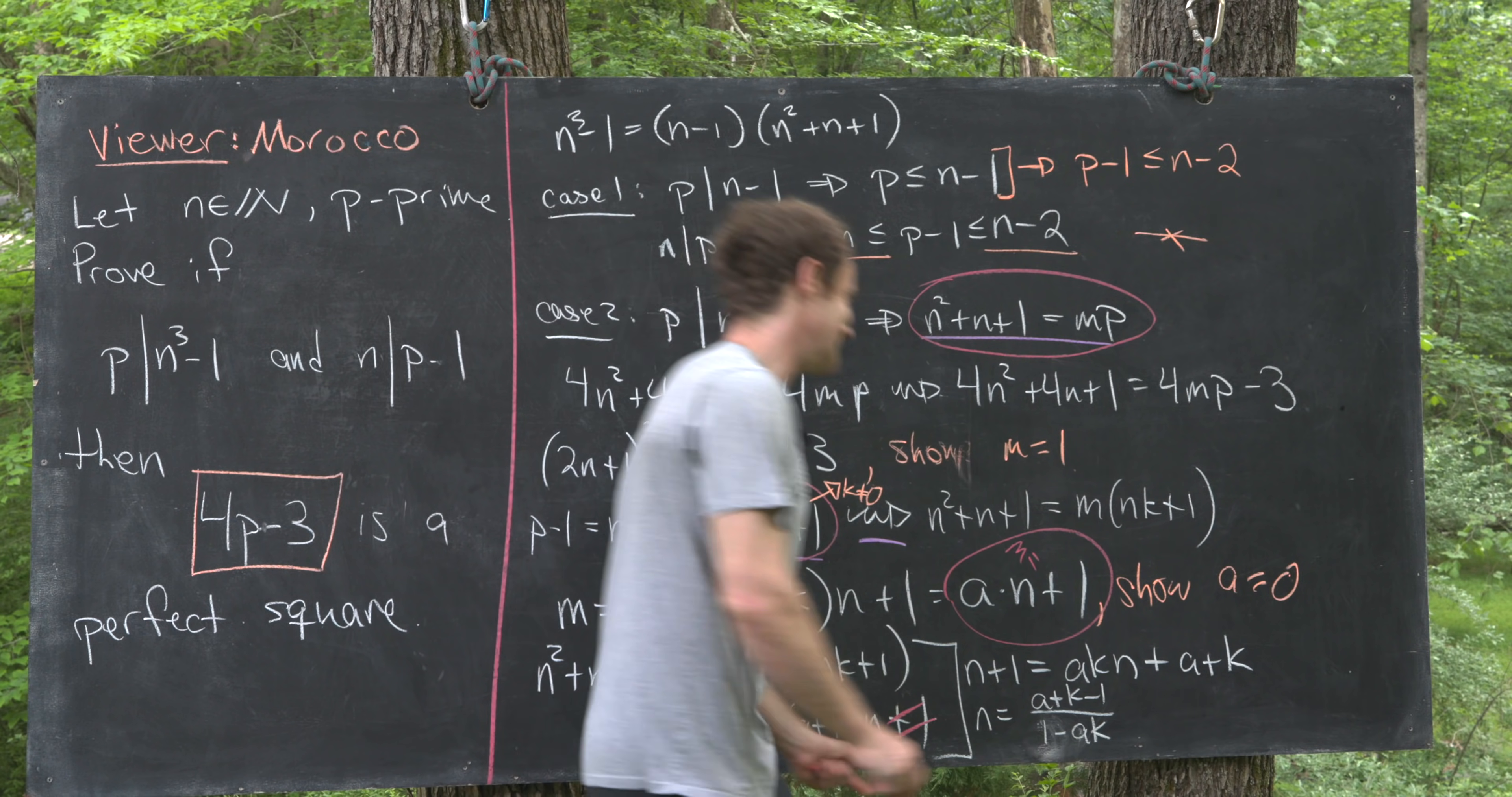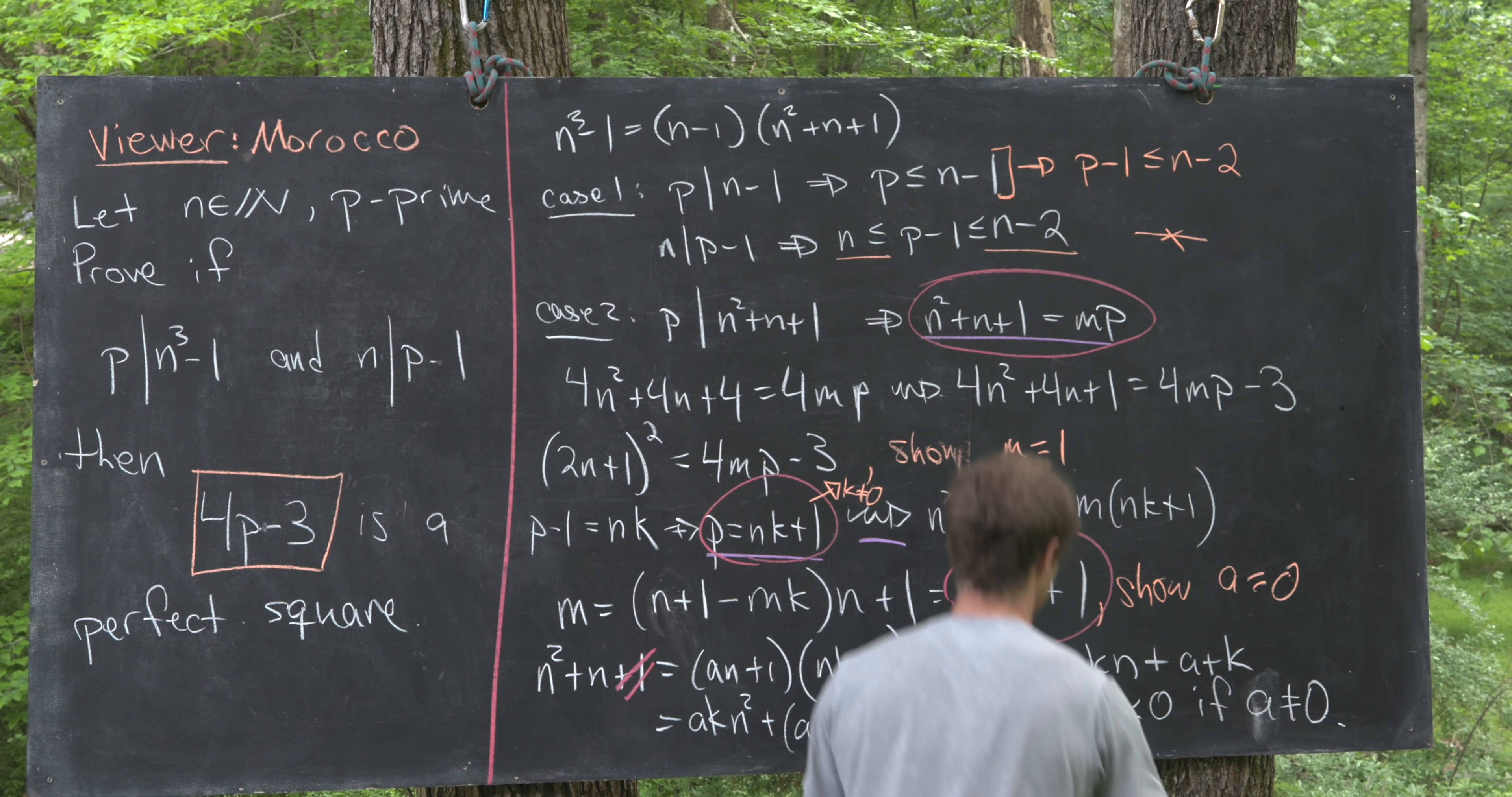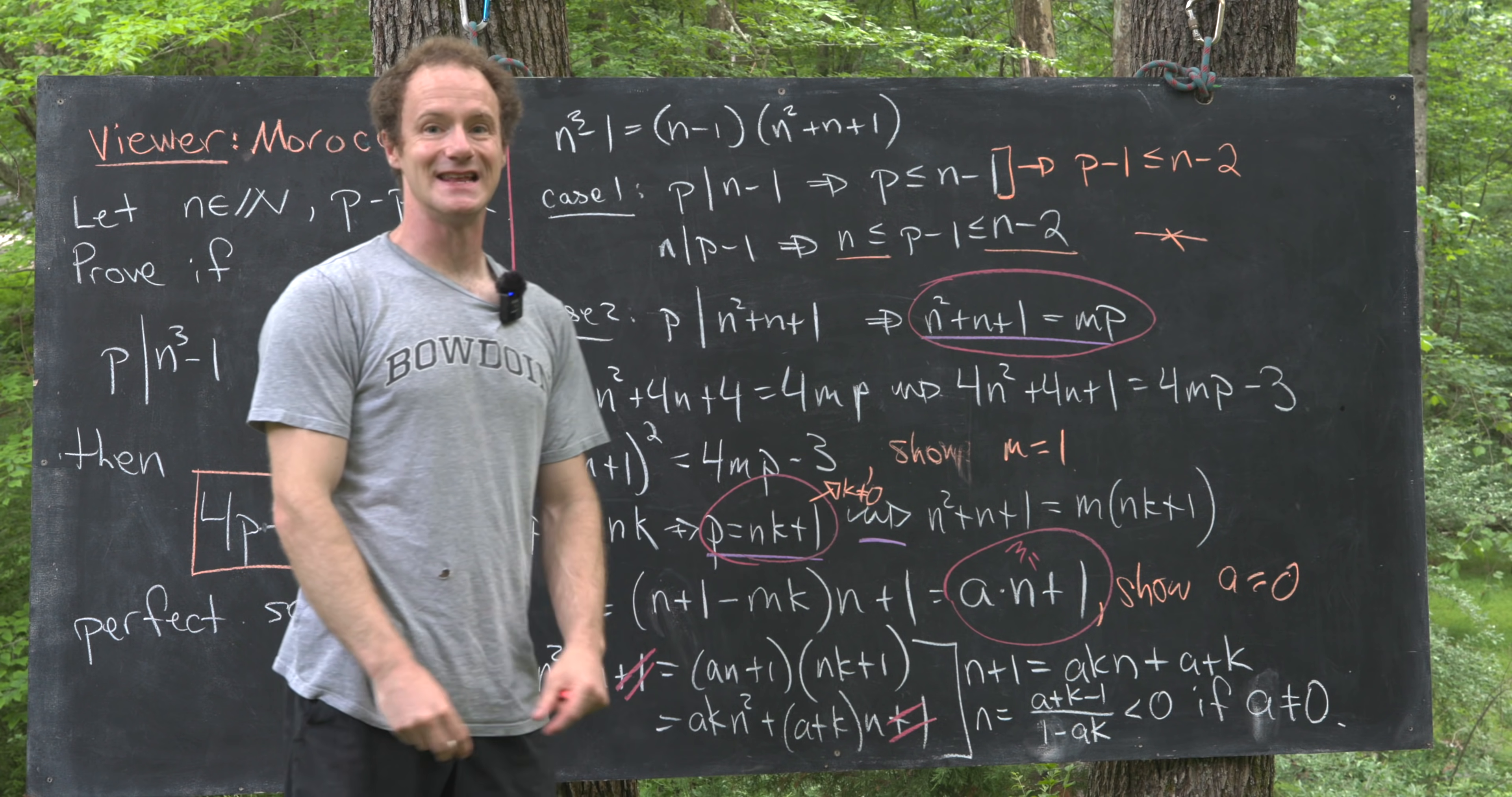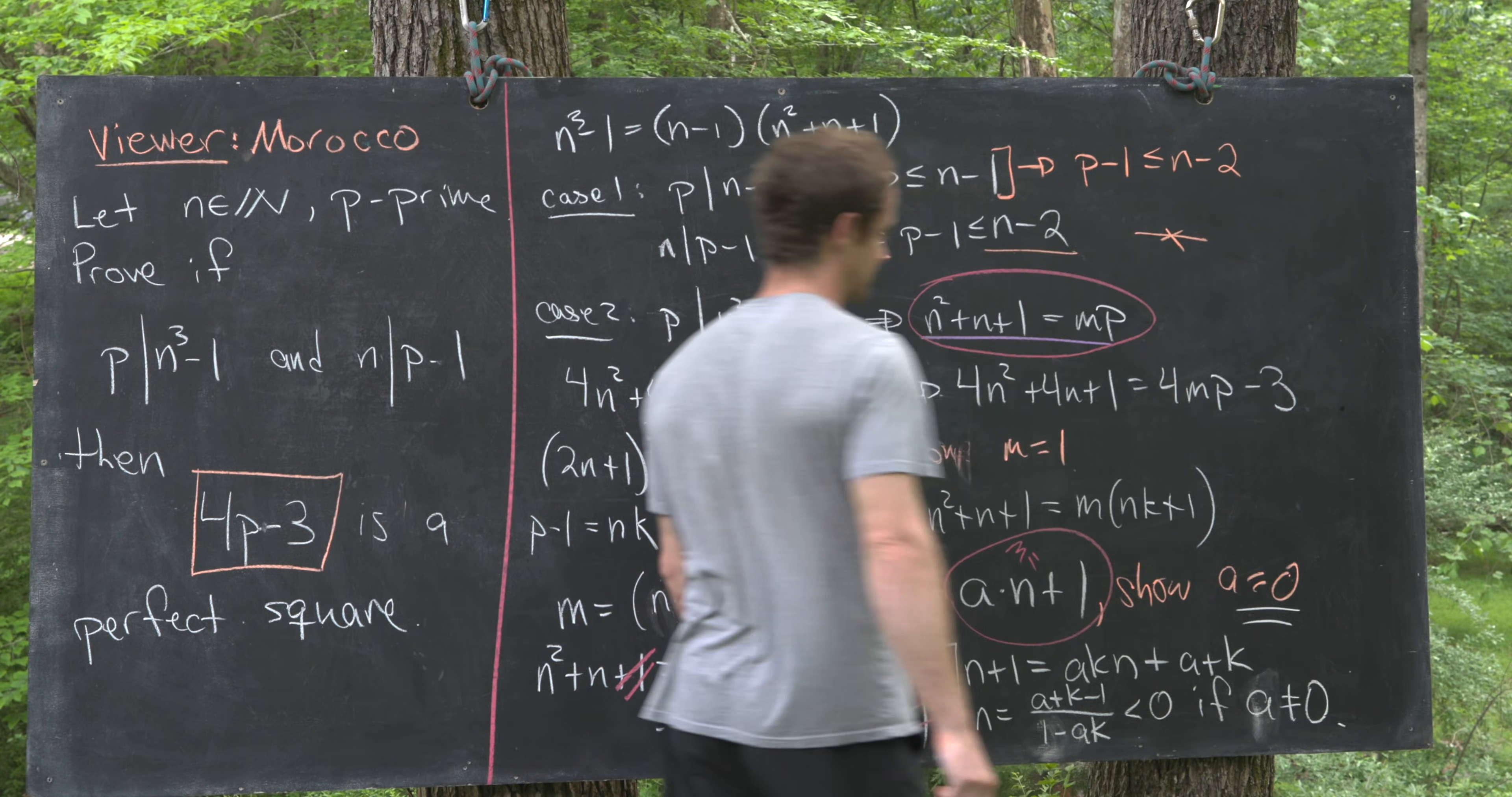But now I want to notice that that is negative if a is not equal to 0, but that means that n is not a natural number.